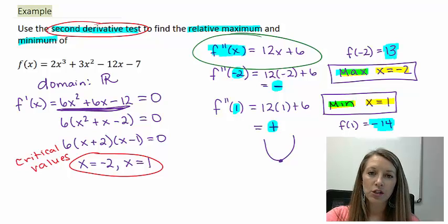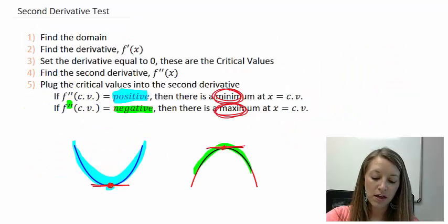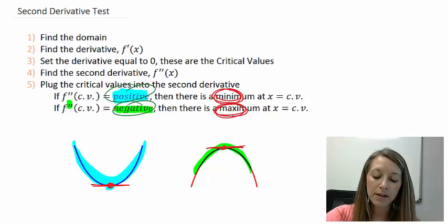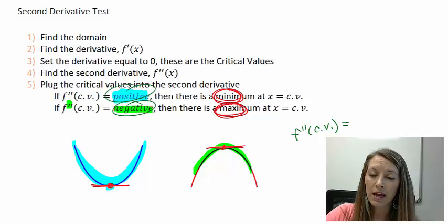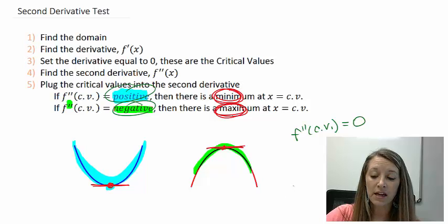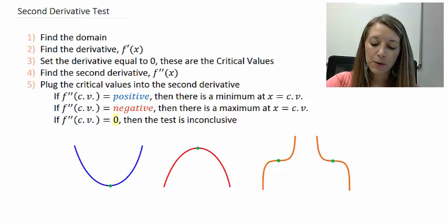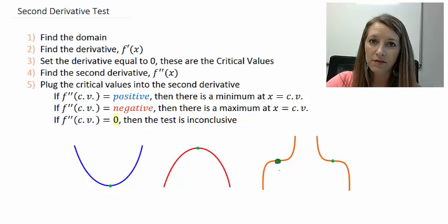Another limitation to the second derivative test is: we found that if it's positive, then it's a minimum; if it's negative, then it's a maximum. But what happens if f double prime of our critical value is neither positive nor negative — what happens if it comes out to be zero? We didn't discuss that. Well, if that is the case, then the test is inconclusive.